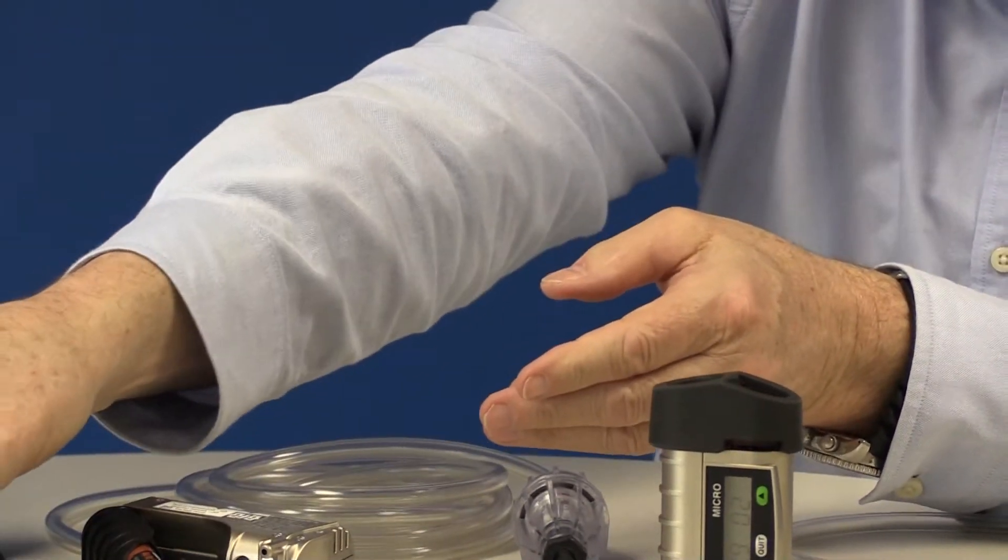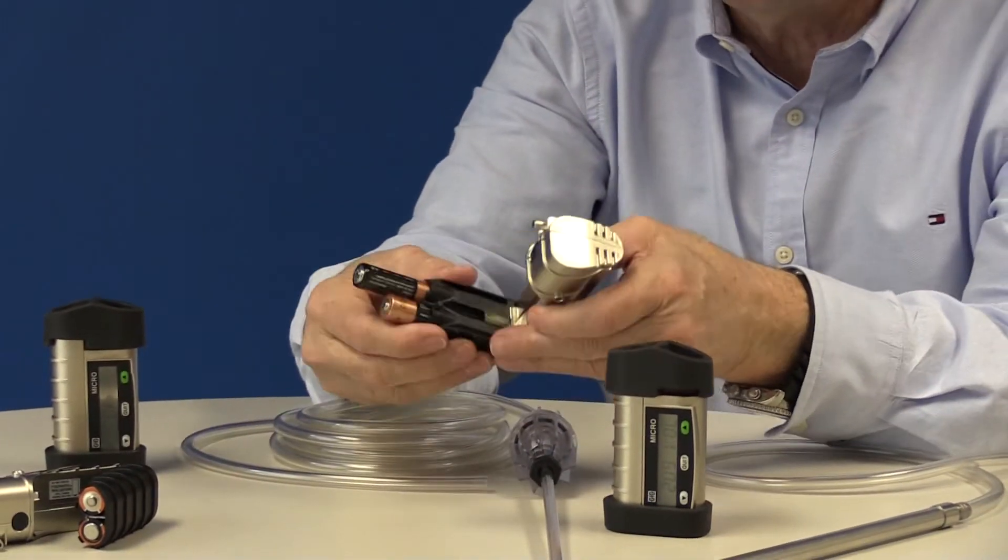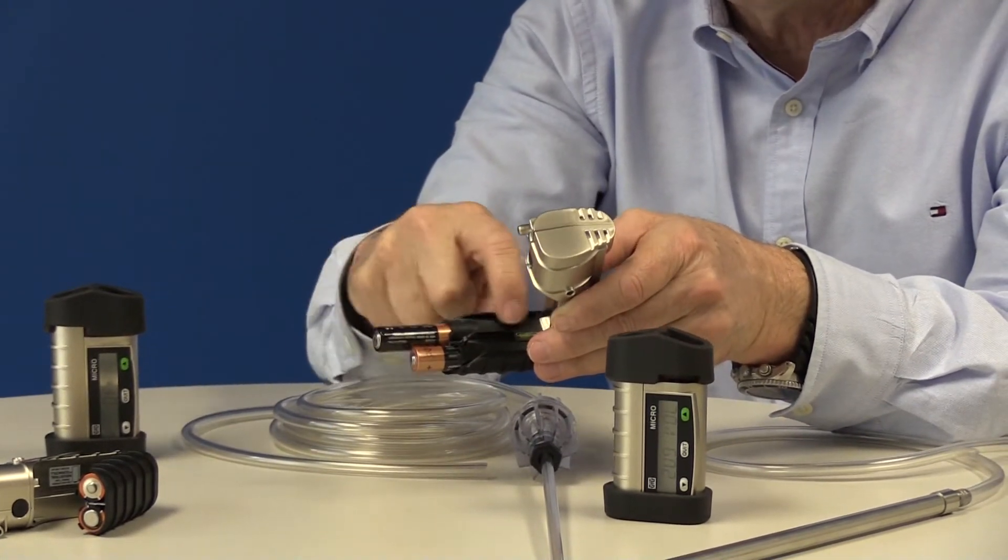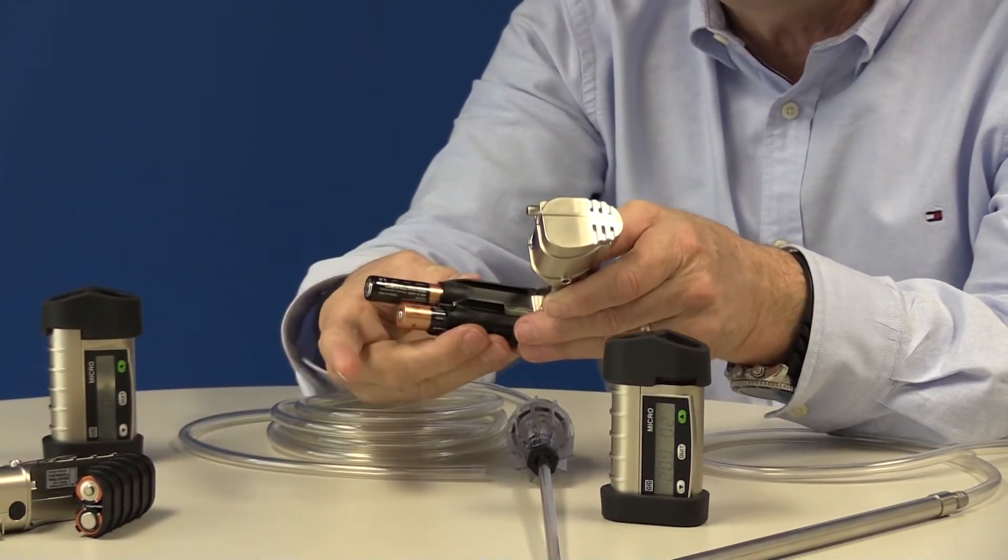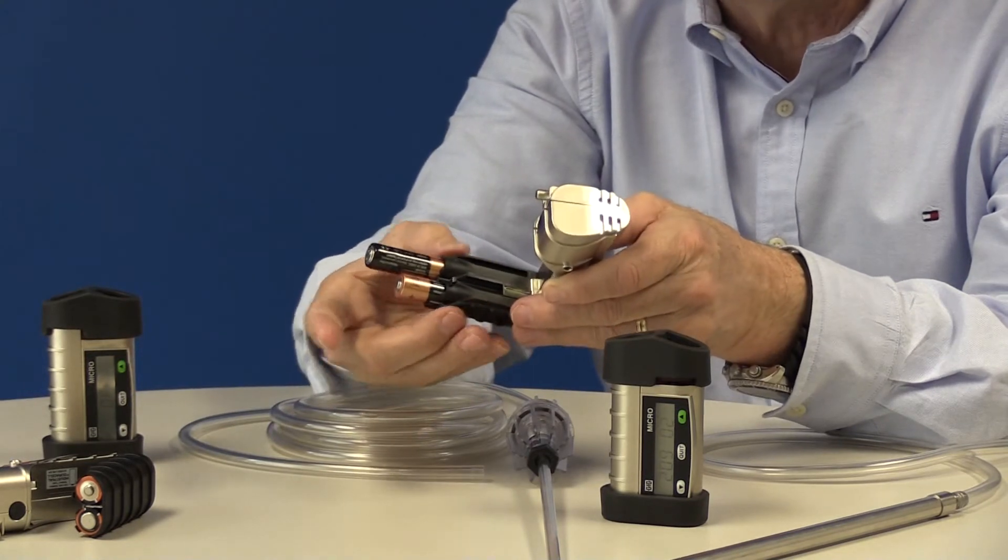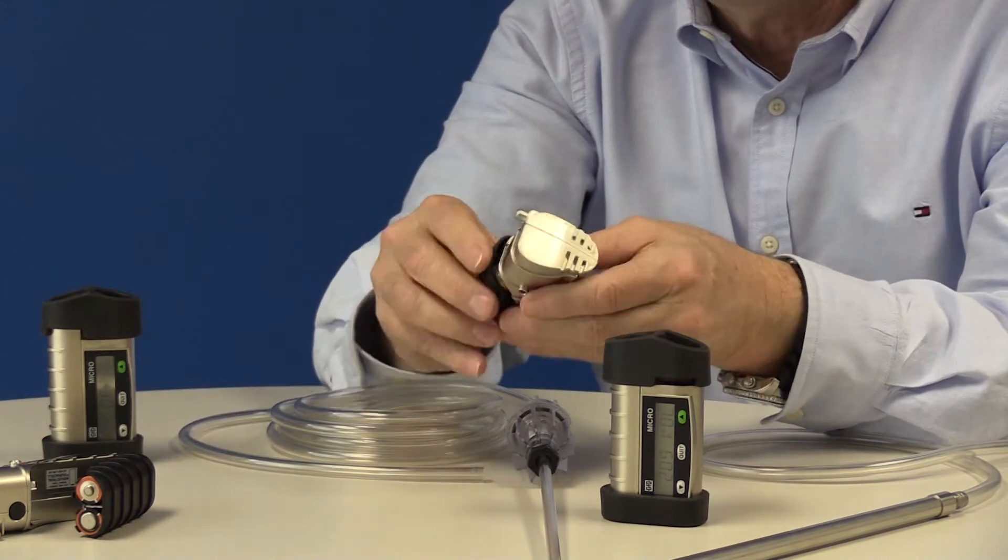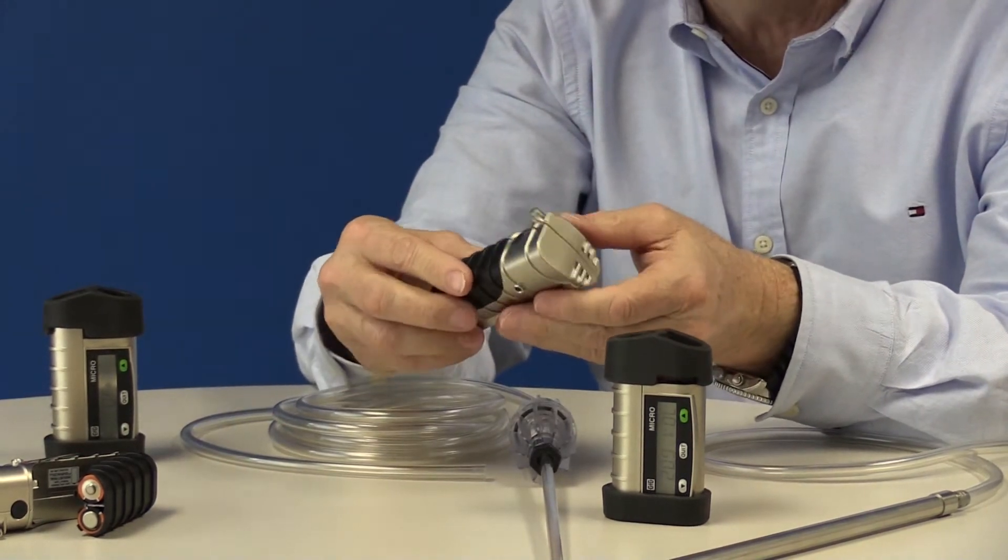To install a set of batteries, make sure that the orientation of the batteries matches the diagram that is embossed into the sensor compartment tray. So push the batteries into place, close up the cover.